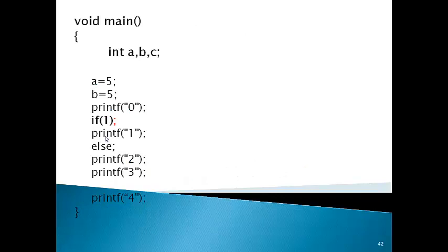Again, we have added a statement terminator after if. So 1 is NOT the body of if — important point. And 2 is else's body, 3 is not, 4 is not. We also studied one rule at the beginning: else must always follow if's body. So if else's body is not after if's body — if there's a printf statement in between — we'll get a syntax error. This is not allowed — it is a syntax error.